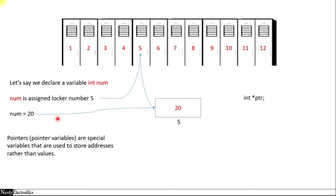To define a variable as a pointer, we write the pointer type and the pointer name with a star. So the name of the pointer is ptr, the type is integer, and the star signifies that this is a pointer — it will be used to store the address of an integer data type. So if we have declared int num, we need a pointer of type integer.